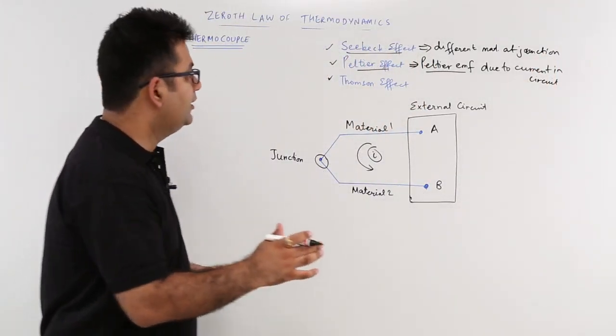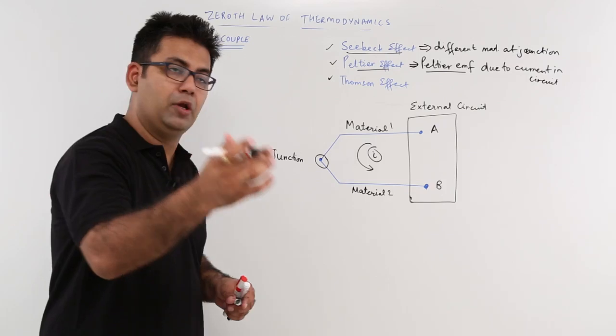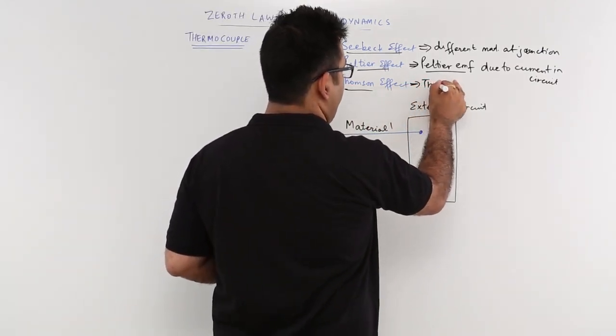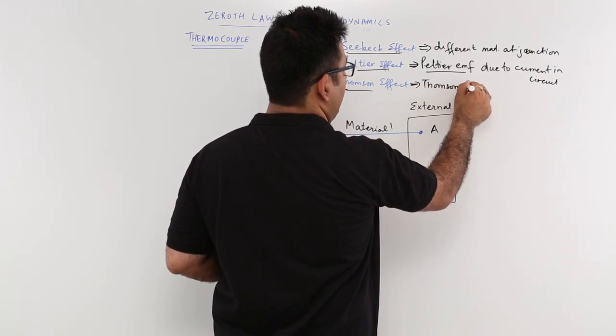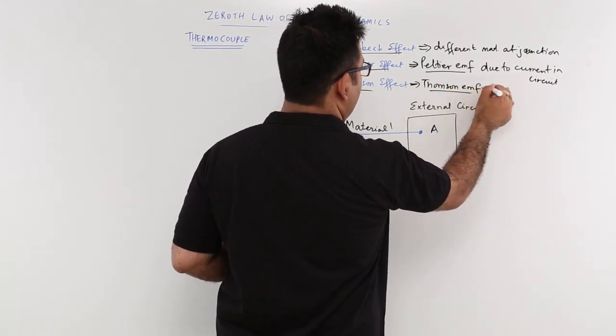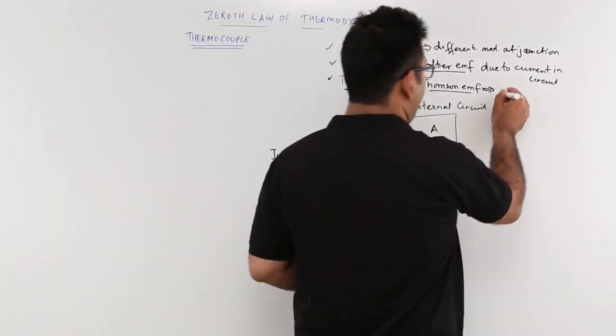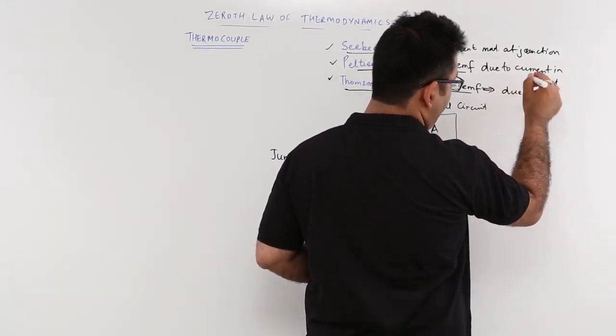And the third one is the Thompson effect, which also produces a Thompson EMF. This Thompson EMF is produced due to temperature gradient between the different materials.